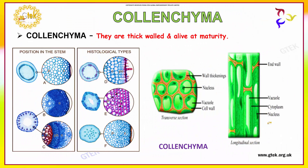Let us see about collenchyma. Collenchyma has thick walls and is alive at maturity. You can see collenchyma here — it has end walls and a thick wall. The vacuole, cytoplasm, and nucleus are represented here. The position of collenchyma in the stem is shown, and the histological types of collenchyma are depicted.